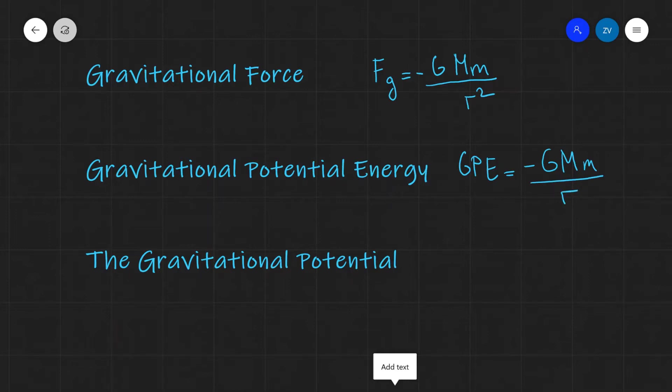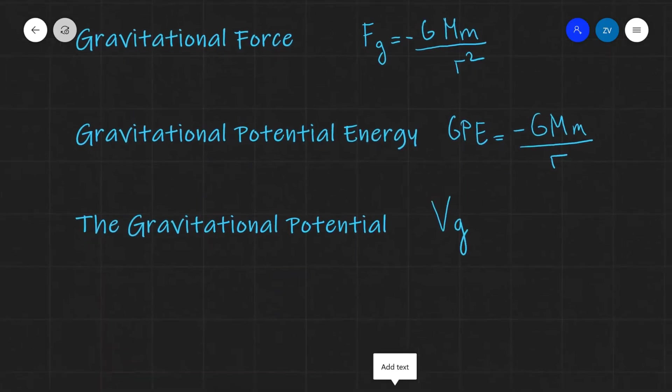Today we're going to be looking at a brand new quantity, which is known as the gravitational potential. The gravitational potential is the gravitational potential energy per unit mass. This is really important. In your formula booklet, it's given by the following symbol, Vg.